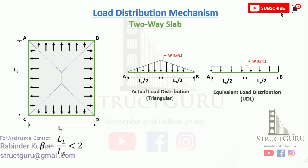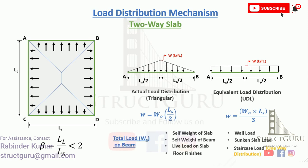The magnitude of loads along the triangular portion is calculated as W0 × LS divided by 2, and the equivalent uniformly distributed load is calculated as W0 × LS divided by 3. The W0 represents the total load on the beam, which is comprised of self-weight of the slab, self-weight of the beam, live load on the slab, floor finishes, wall load, sunken slab load, and staircase load, which is generally assumed as one-way distribution.